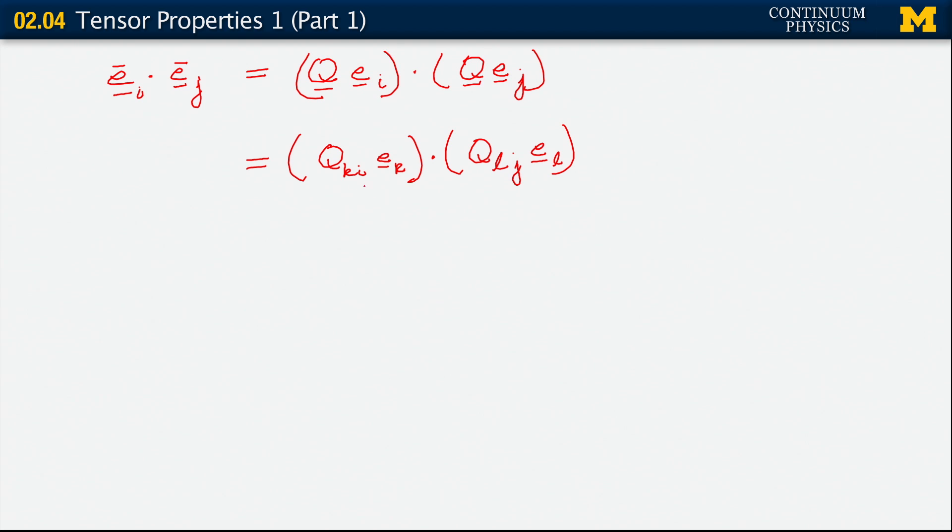Now, in this sort of expression, the q k i and the q l j are essentially components. They're scalar components, so they don't really get in the way of multiplication. What that allows us to do is to write out this expression as q k i q l j e_k dotted with e_l, using the properties of linearity of the dot product. But then we know already that because of the orthonormality of the original set of basis vectors, e_k dot e_l is delta k l.